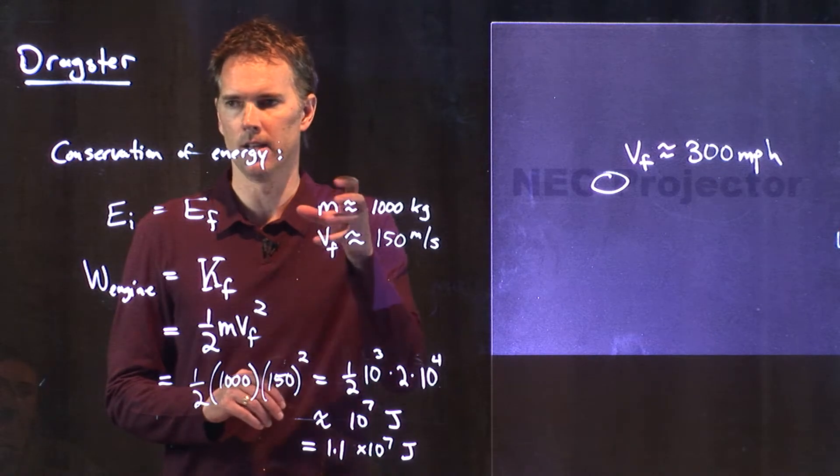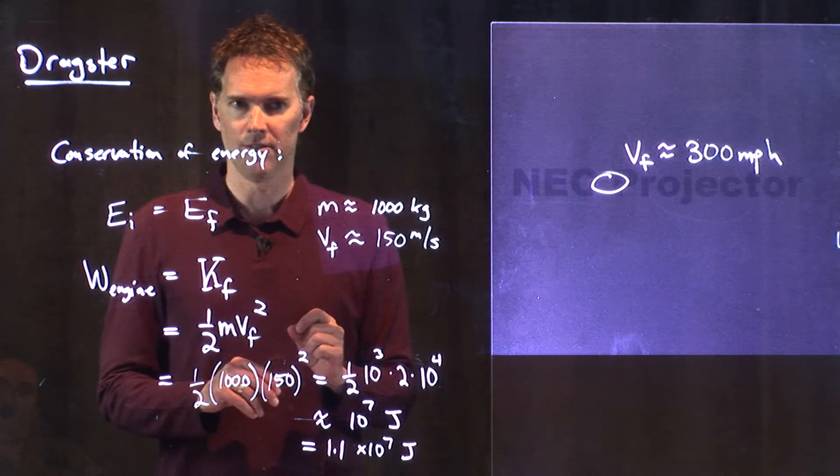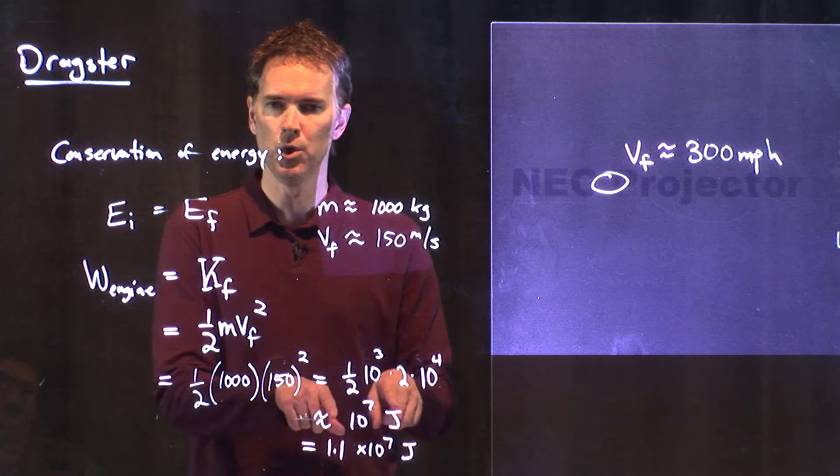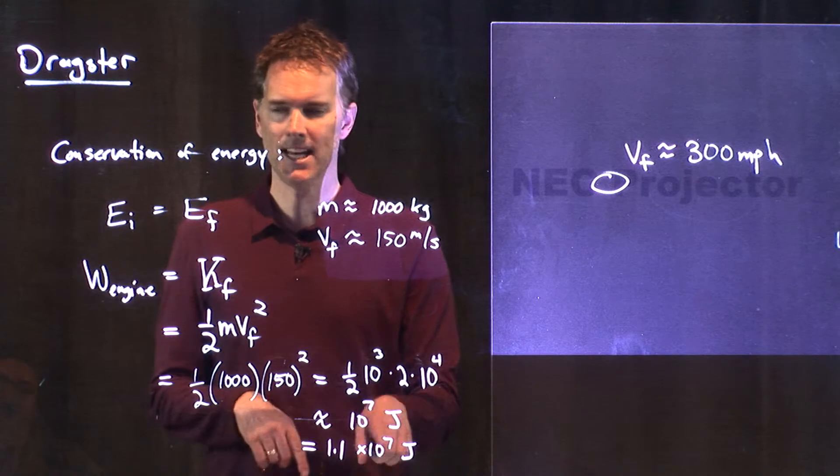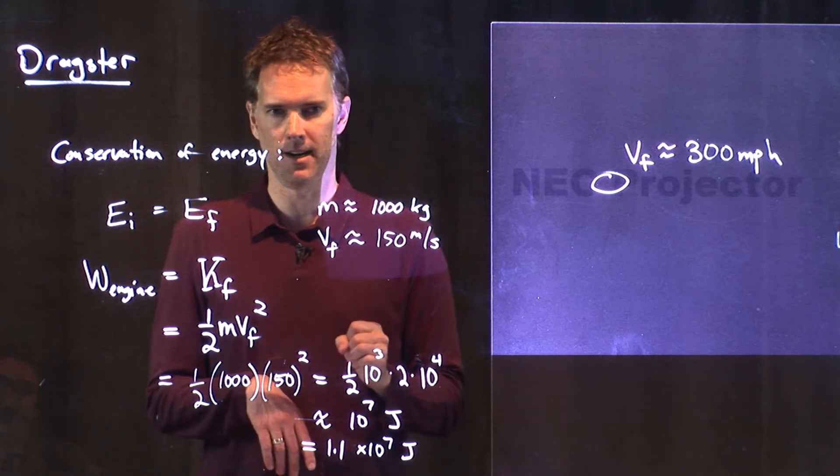Lifting that one kilogram weight, you've done 10 joules of work. And so, what this is saying is, to get to this energy, you would have to do that 10 to the 6th times. You would have to do that one million times.